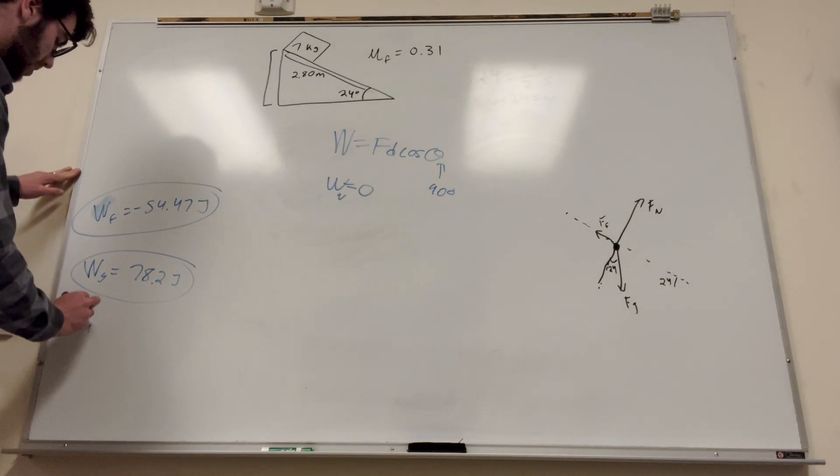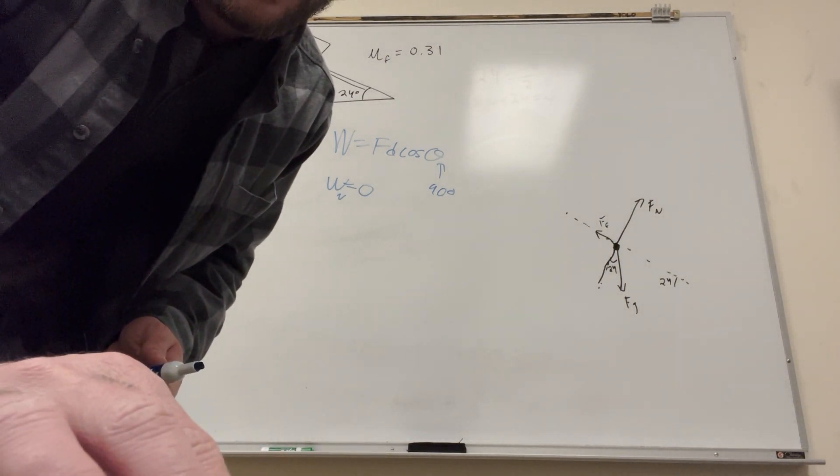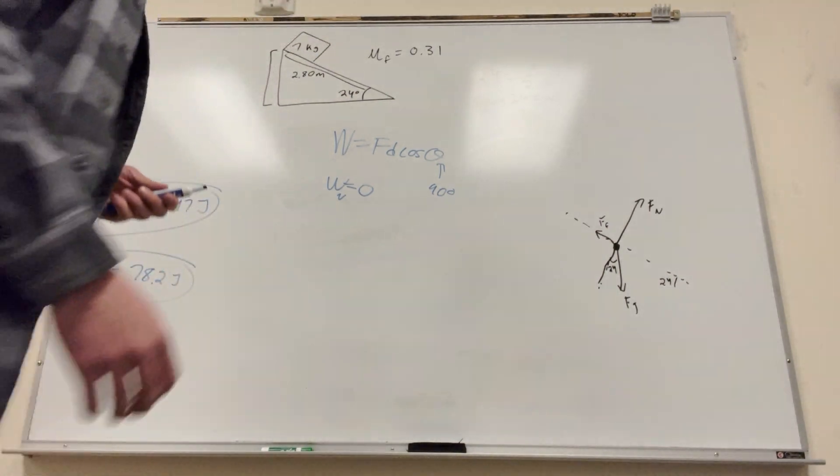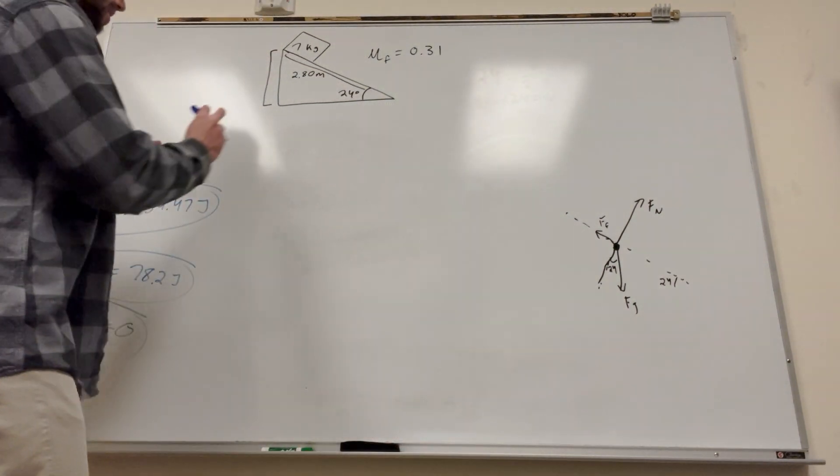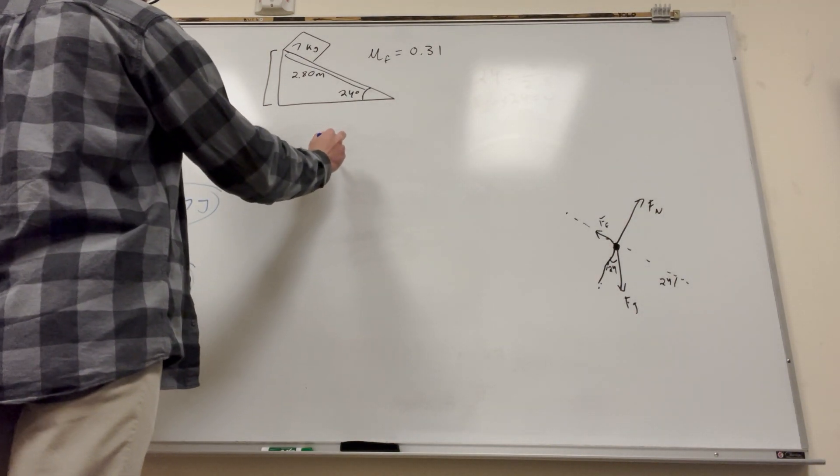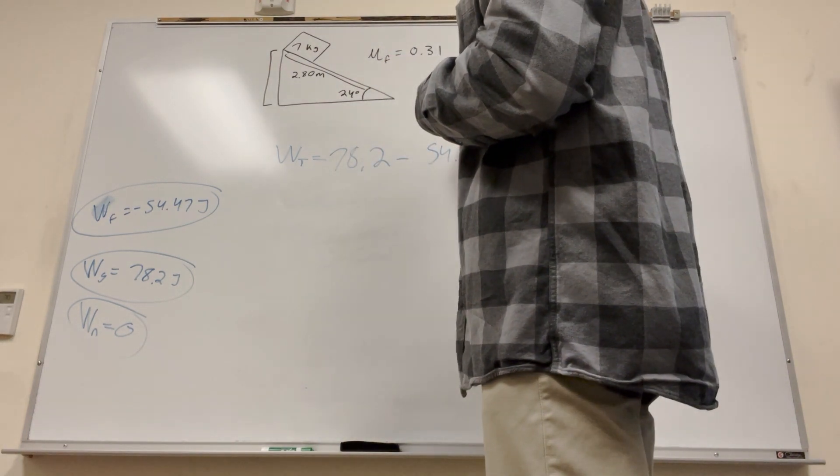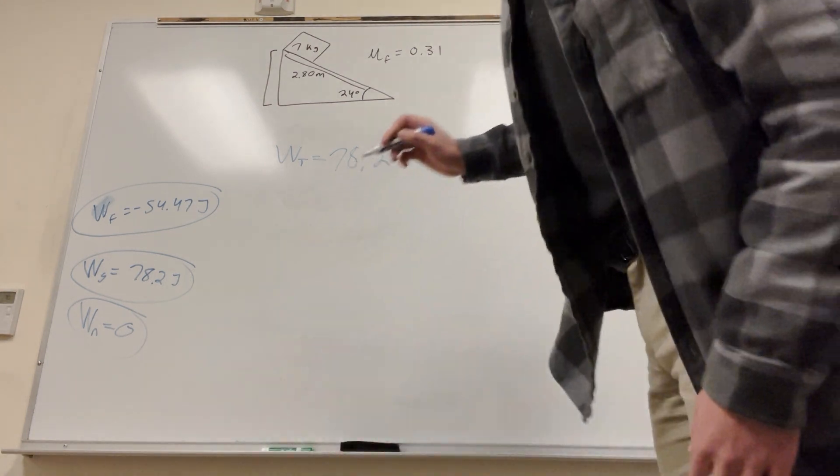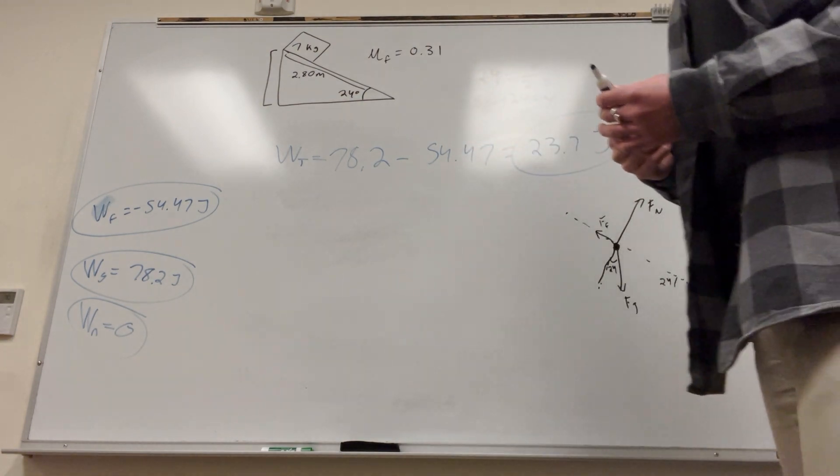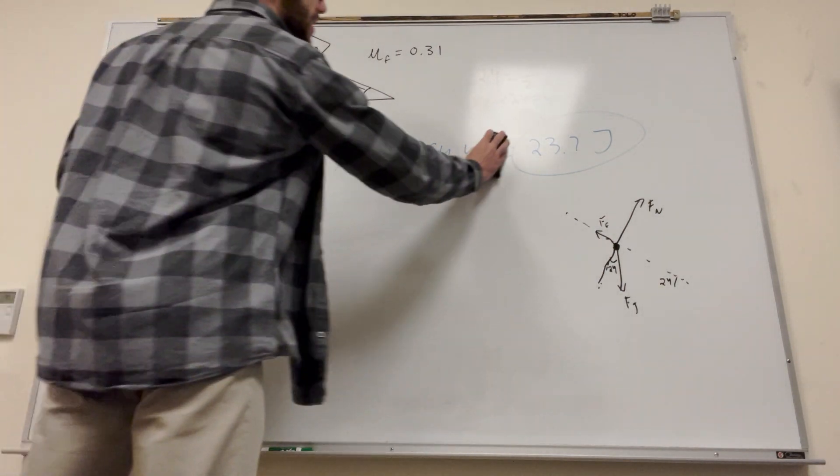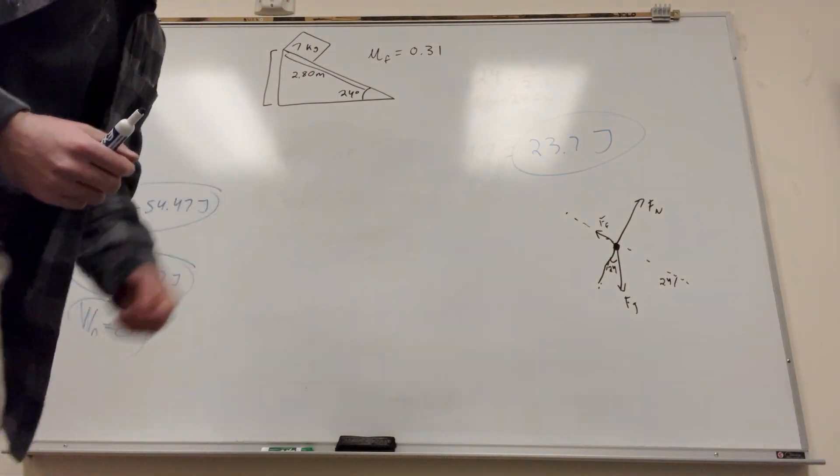So, there you go. Work of normal is equal to zero. Okay, great. Now it's saying, part D, find the total work done on the package. This part is a lot simpler than the other parts. If you want to find the work, you just got to find the sum of all the forces. So work total is the sum of the work. So it's going to be 78.2 minus 54.47 and that's going to be equal to 23.7 joules. There you go. That's the total work. It's basically you just sum up all the works. All right, that's how you find that one.